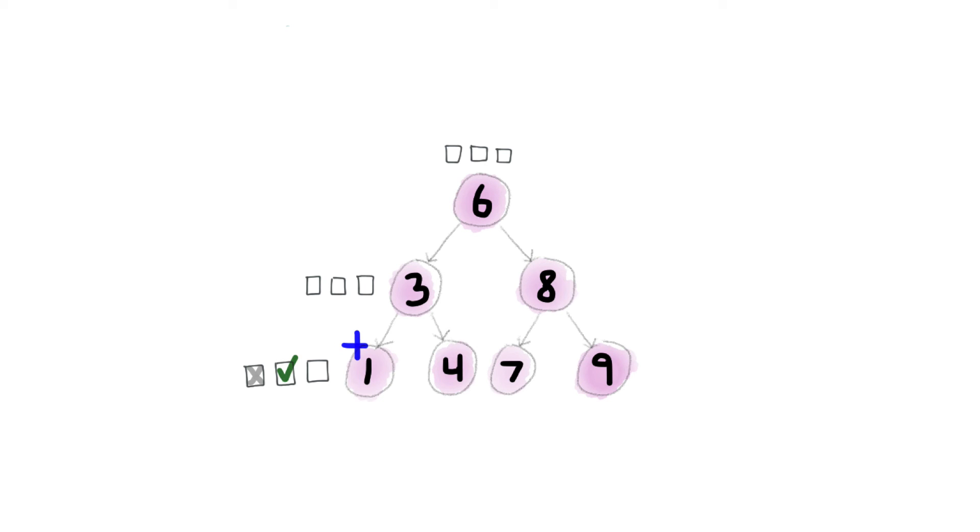One also has no right child, so the third step for one is done. And so is the first step of three. So now three gets pushed, and the procedure is called on the right child of three, four.